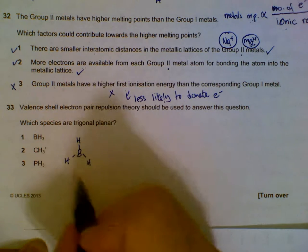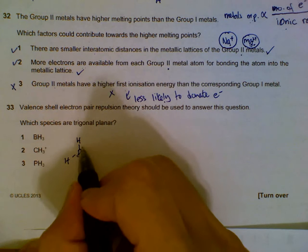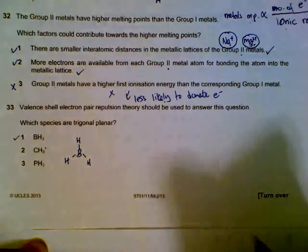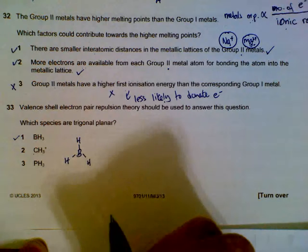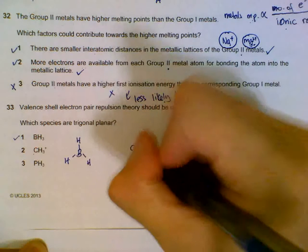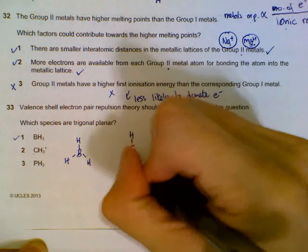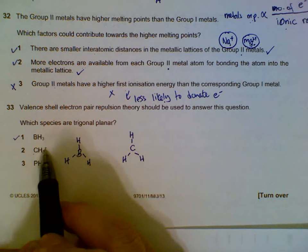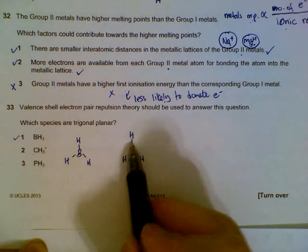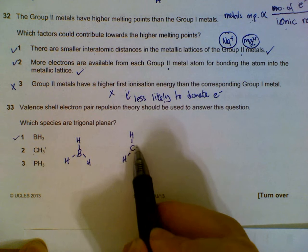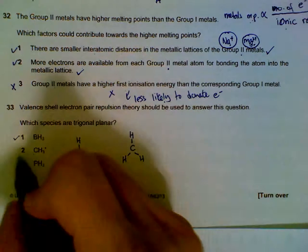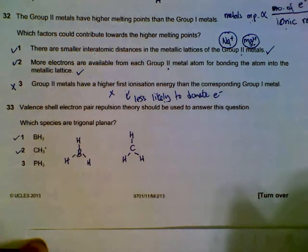BH3 has three bond pairs and zero lone pairs, so it is trigonal planar. CH3+ has carbon with originally four electrons, and the plus means it has lost one electron, so it only uses three for bonding and has no lone pair. This is also trigonal planar.